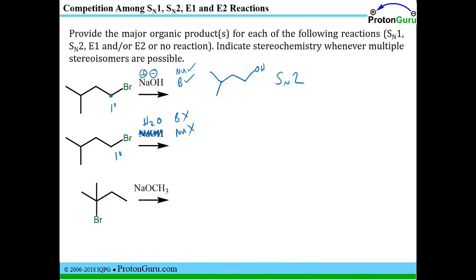And we can't do SN2. We can't do E2 without a strong base. We can't even do SN1 or E1 because we need to make a carbocation in those cases, and a primary carbocation is very unstable. So we would have no reaction in such cases.